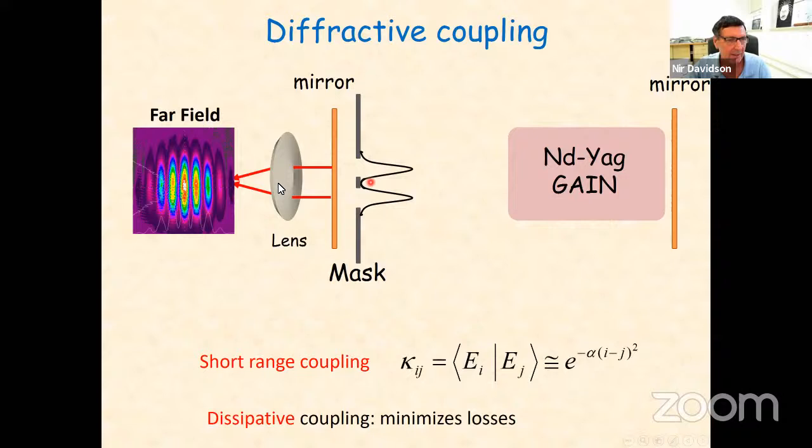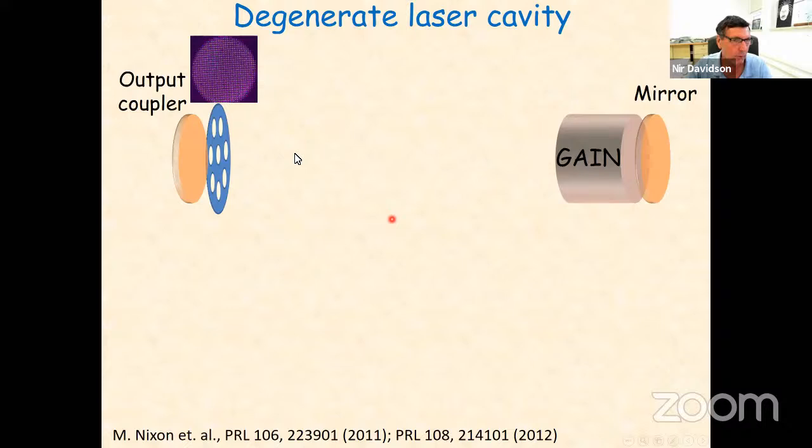We can already guess that the minimal-loss solution is when we have destructive interference on the metal blockade. If the two modes have a pi phase difference, they destructively interfere there, minimizing the loss. Mode competition will then select, from all possible relative phases, the one that minimizes loss. We now want not two lasers but many, so we replace the mask with two holes with a mask having 1,500 holes, as I showed in the beginning.